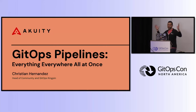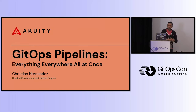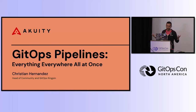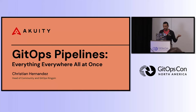GitOps pipelines — as I like to call it, everything everywhere all at once. My name is Christian Hernandez. I am the head of community over at Acuity. I also refer to myself as the GitOps kingpin, which was an inside joke that probably only three people get, but I stuck with it. So let's talk about pipelines.